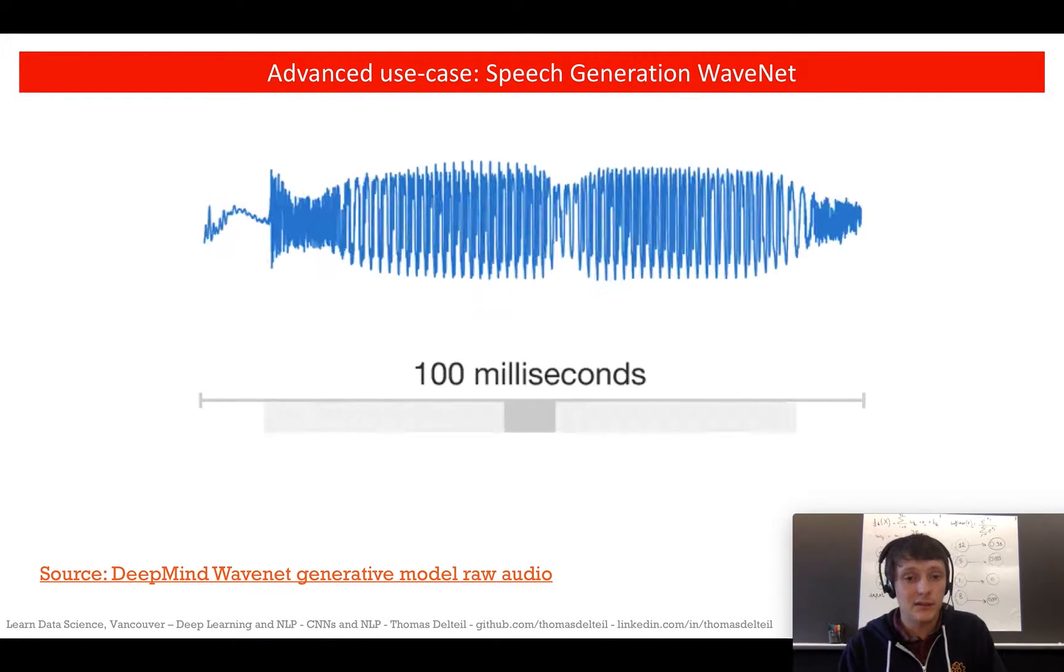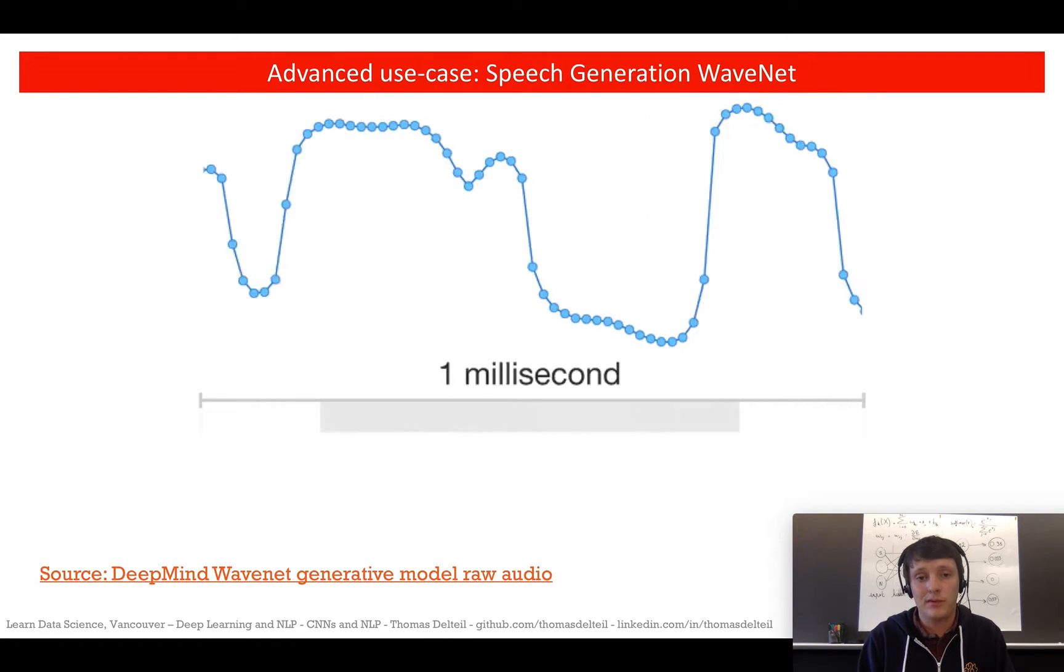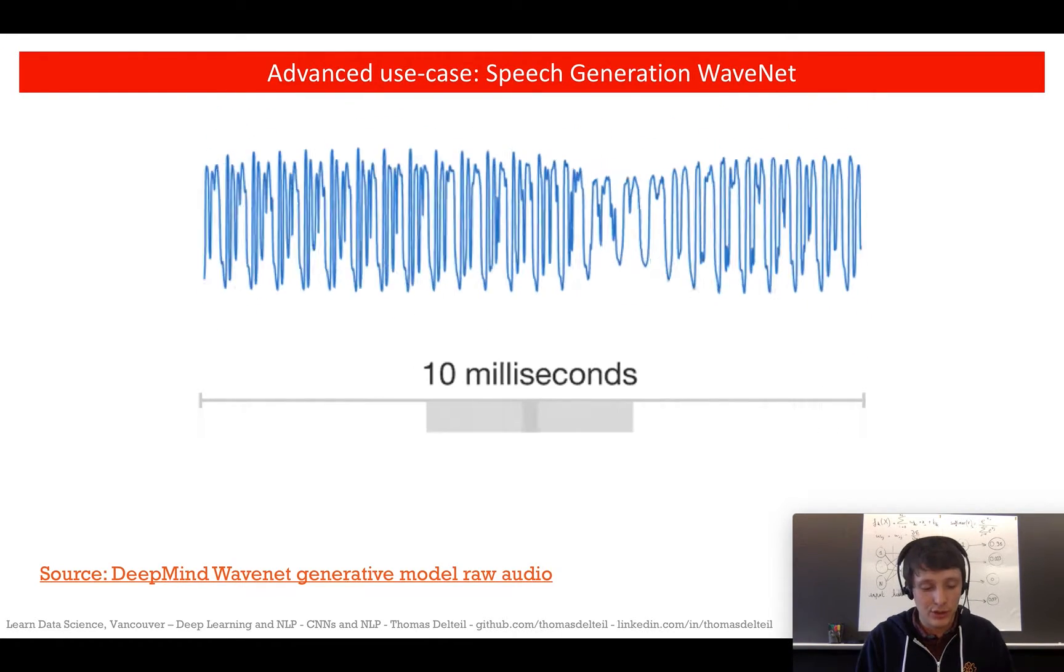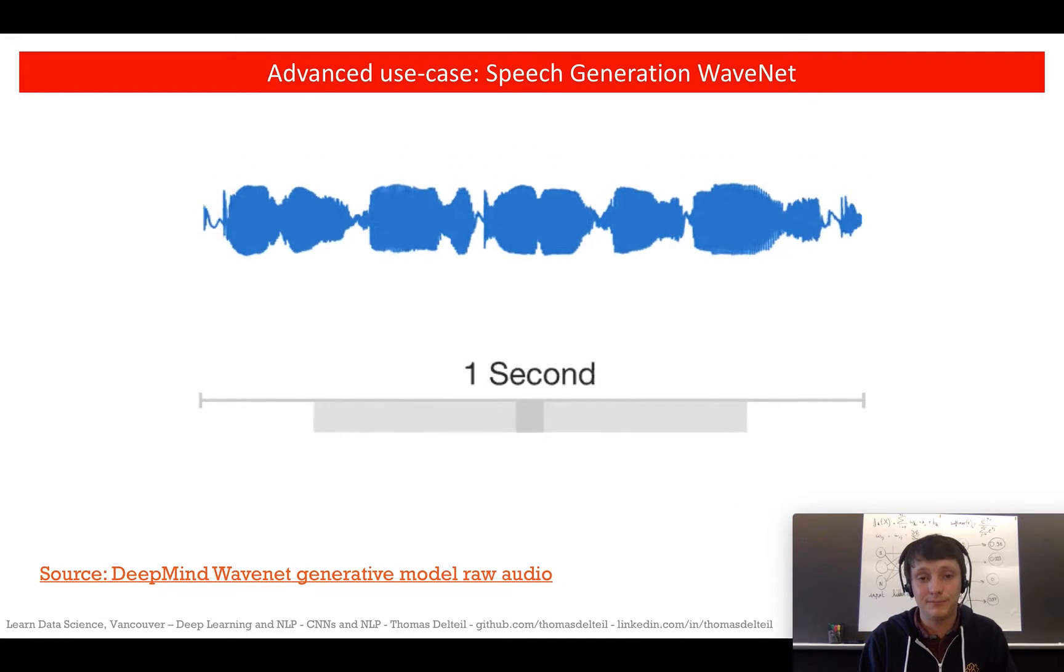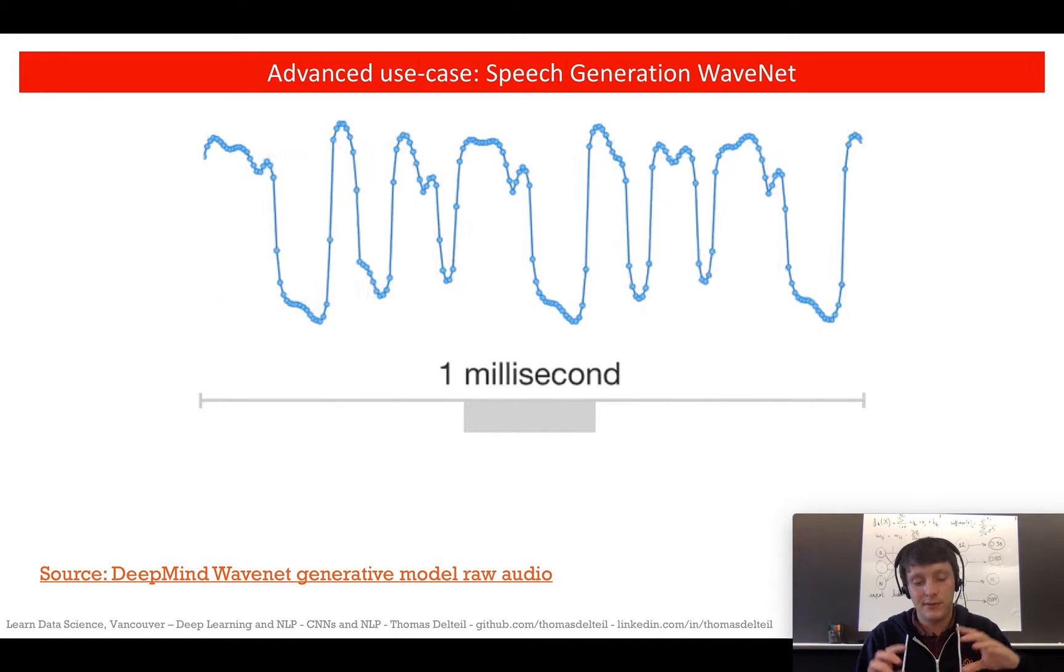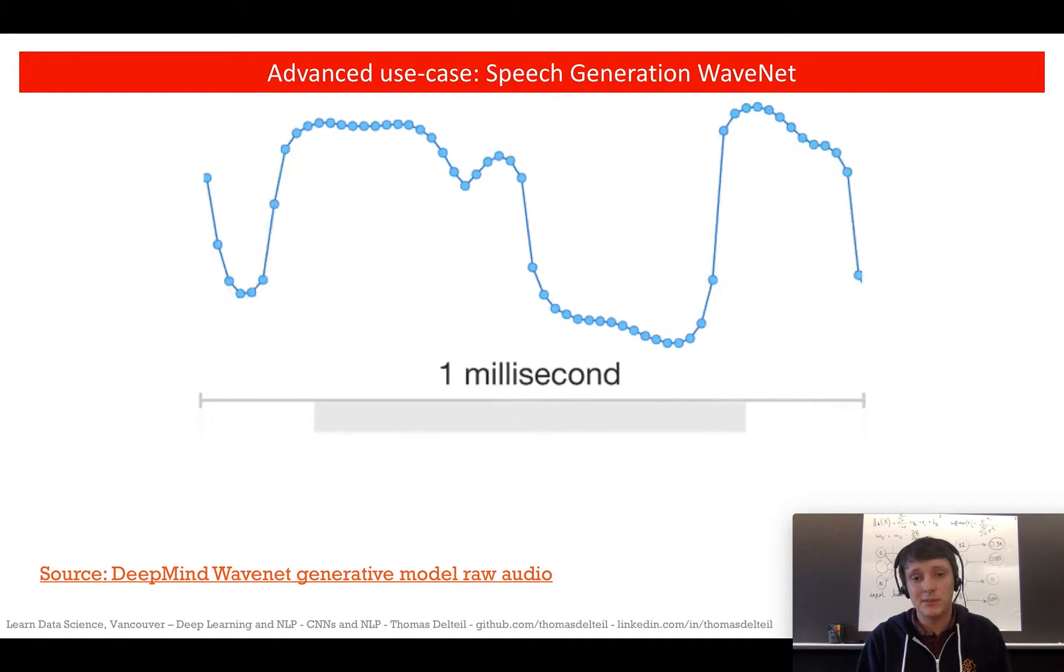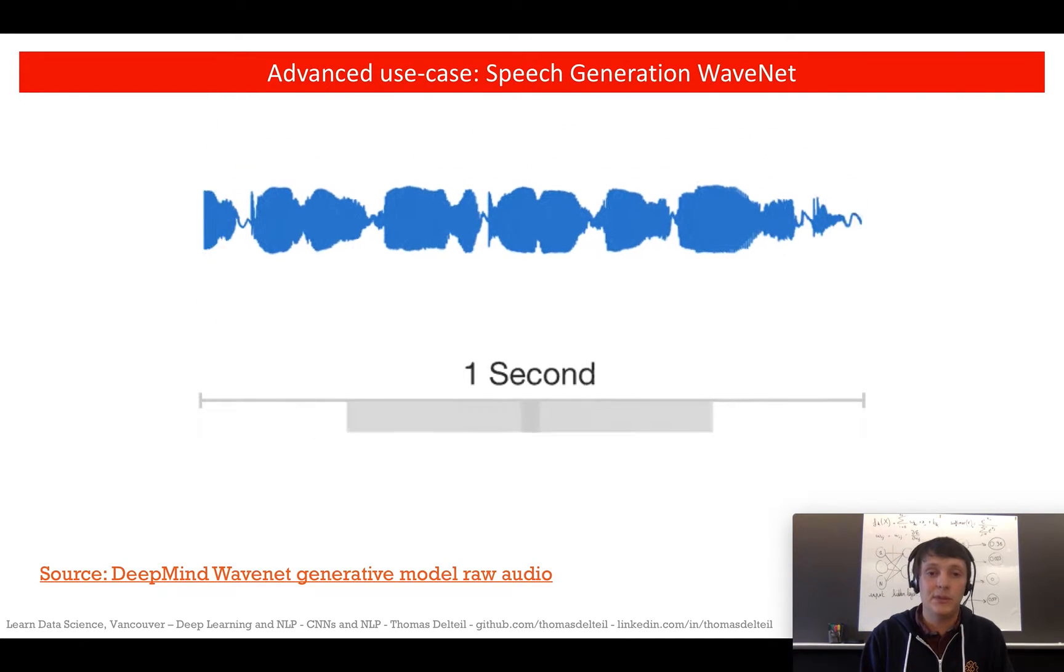Another advanced use case is speech generation with WaveNet, where you want to generate audio that sounds like a human from text. People used to do that in the frequency space, taking this frequency representation as an image and using convolution on that.